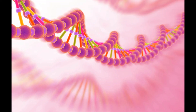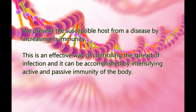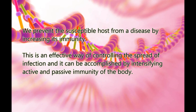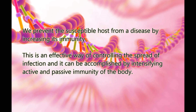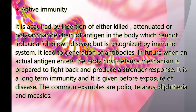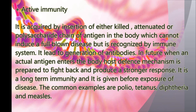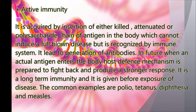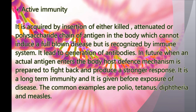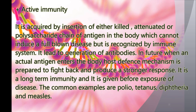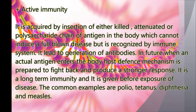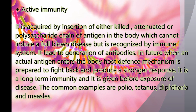Susceptible host: By increasing its immunity, we prevent the susceptible host from many communicable diseases. It is an effective way of controlling the spread of infection, accomplished by increasing active and passive immunity. Active immunity: It is acquired by insertion of either killed, attenuated, or polysaccharide chain of antigen in the body, which cannot induce a full fulminant disease but is recognized by the immune system, leading to generation of antibodies. When an actual antigen enters the body in future, the host defense mechanism is prepared to fight back with a stronger response. It is long-term immunity, given before exposure to disease, so it has preventive value.